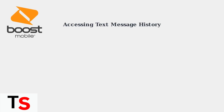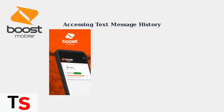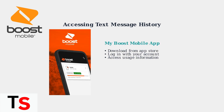To access your Boost Mobile text message history, you'll need to use either the My Boost Mobile app or their website. Let's walk through the process step by step. You can access your text history through the My Boost Mobile app on your phone. The app provides a convenient way to view your account information and usage details.